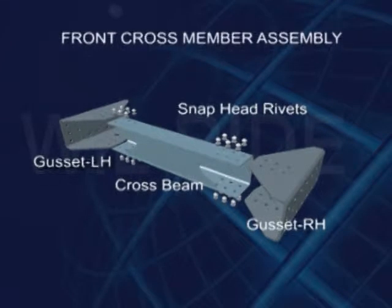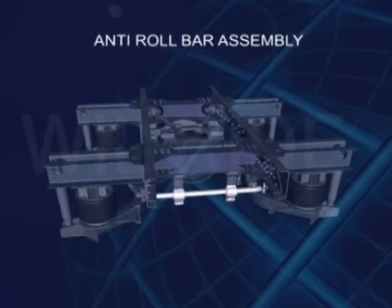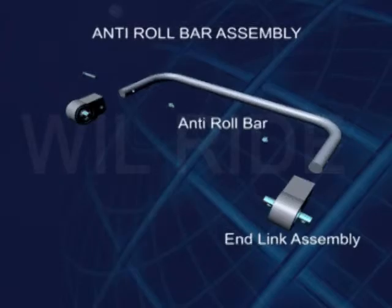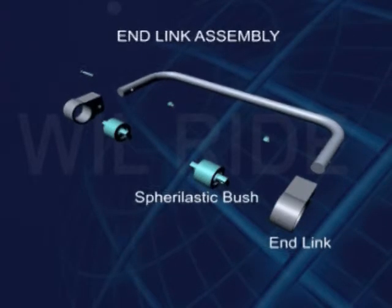Anti-roll bar assembly helps in controlling body roll during cornering. Anti-roll bar assembly may consist of anti-roll bar and end link assembly. End link assembly may consist of anti-roll bar end link and spherical elastic bush.